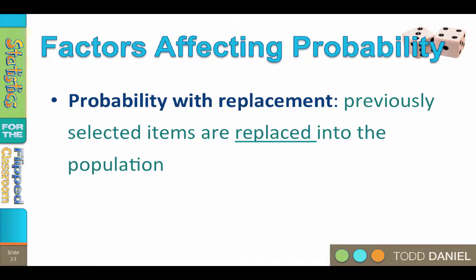Another factor that affects the probability of an event is whether there is replacement. Probability with replacement is calculated after any previously selected items are replaced back into the population. Choose a card, look at it, and then return it to the deck — that is probability with replacement. What is the probability that I can select your card at random? One in 52. But if you keep the card, then what is the probability that I can select your card from the deck at random? Zero — or maybe one if I look through all the other cards and determine which one is missing.